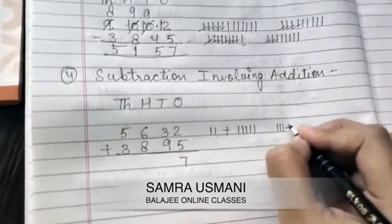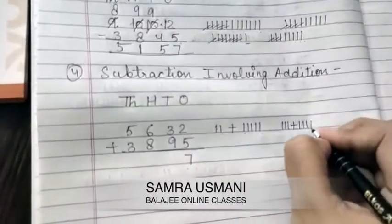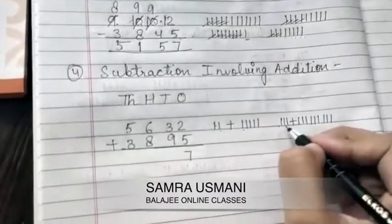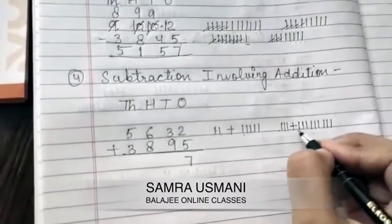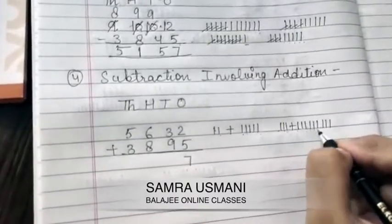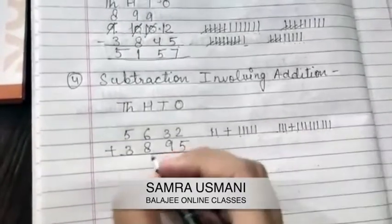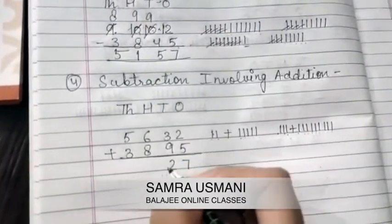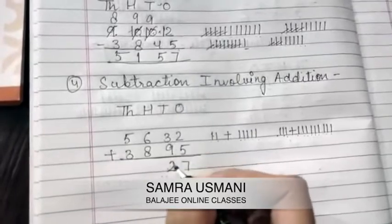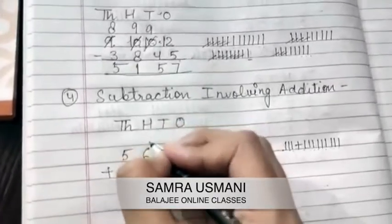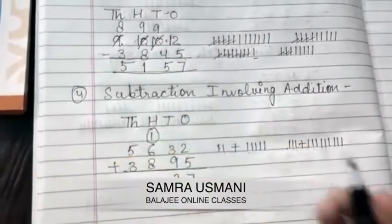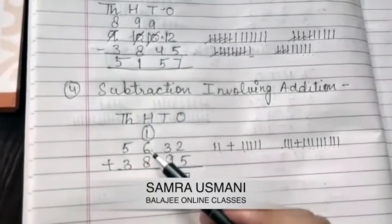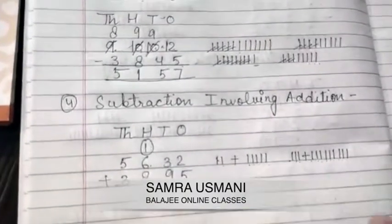We have 12, so we write 2 and carry 1 to the tens place. Then in the tens: 6 plus 1 carry gives 7, and 7 plus 8 gives 15, then plus remaining digits.